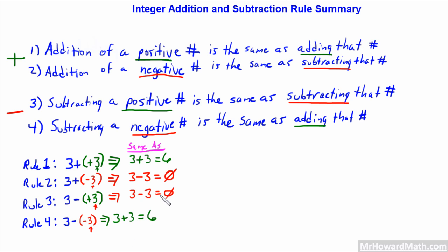So that is a summary of the rules we've established. Notice the pattern: when the signs are the same — both positive, or both negative (subtracting a negative) — the result is the same as adding. Rules 1 and 4 are equivalent. When the signs are different, Rules 2 and 3, the result is the same as subtracting. I wanted you to have this basic rule summary to refer to for reference.